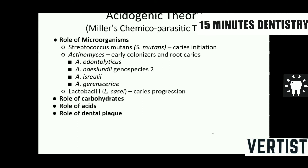The acidogenic theory, or Miller's chemico-parasitic theory, says that caries is not caused by a single factor — it is multifactorial. Microorganisms, carbohydrates, acids, and dental plaque all play a role. The acids produced from carbohydrates by microorganisms present in dental plaque ultimately cause demineralization of the inorganic portion, and the caries progresses inside toward the dentine.